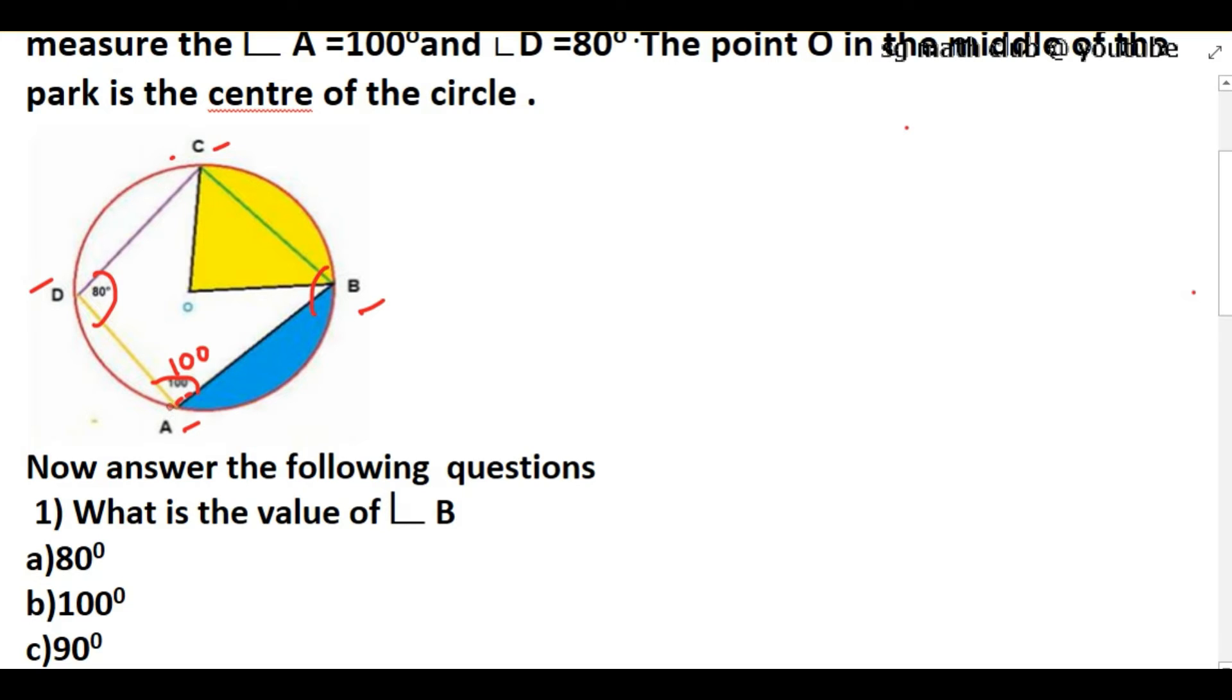We know that in a cyclic quadrilateral, opposite angles are supplementary. That means if you add those two angles, you will get 180 degrees. So what will be the measure of angle B? 180 minus 80 equals 100 degrees. Therefore, angle B is 100 degrees.